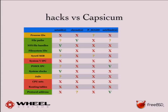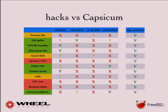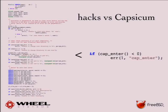Looking at the namespace table again, with Capsicum it looks much better — all namespaces are protected with no question marks. And if you compare the code required to sandbox using the old techniques versus Capsicum, the old code is very complex. You can replace all of it with one cap_enter() call and get much more protection. Much simpler and much more complete.